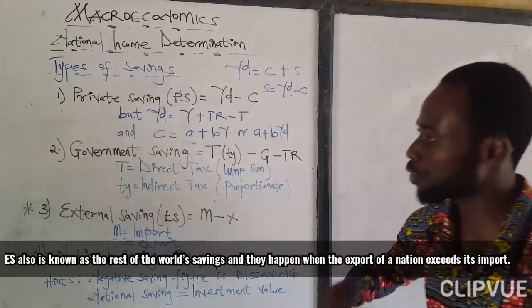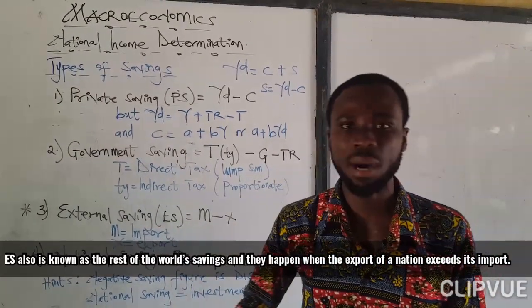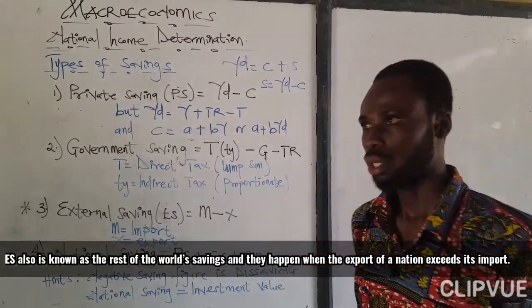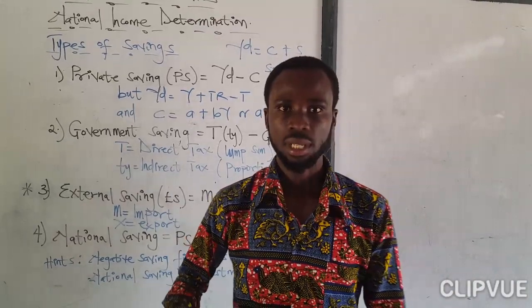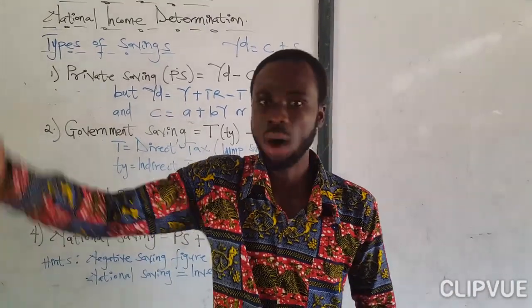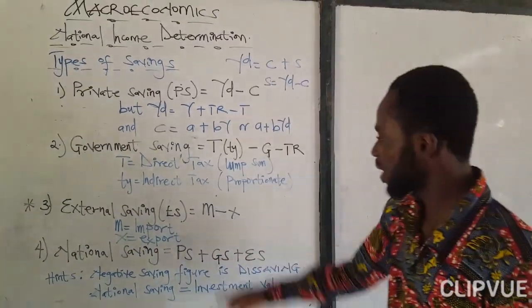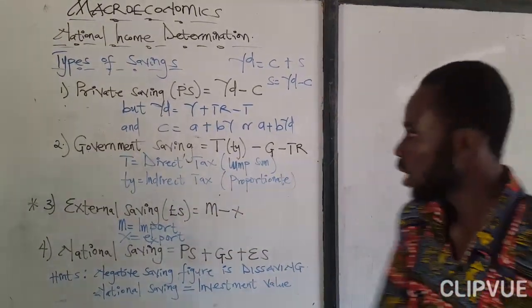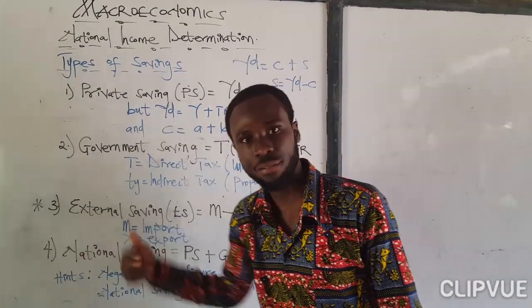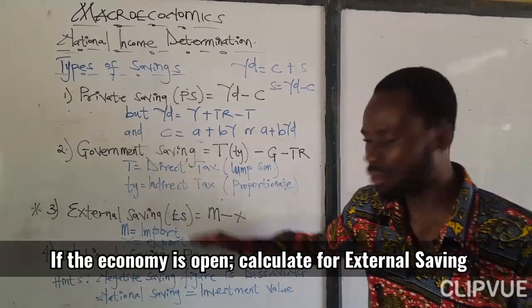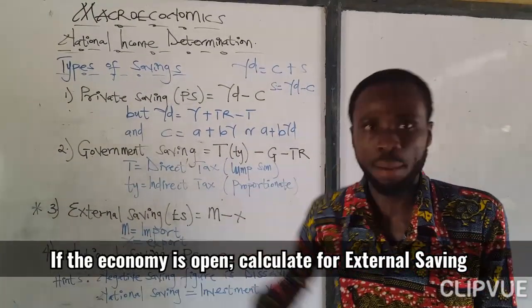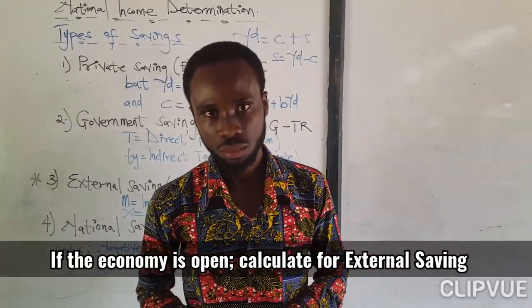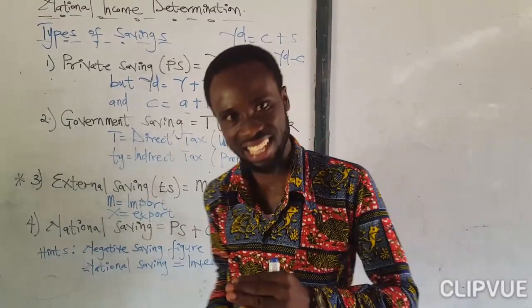Now, external savings. We are talking about external savings, we are talking about the savings that you save in the rest of the world. Considering import, when we import, it means that we are giving money to the outside world. So we are saying that import minus export will give you the external savings for the rest of the world. I have put a mark here signifying that this type of savings, we only calculate them whereby import and export is in the question.